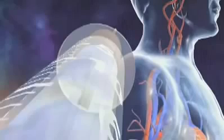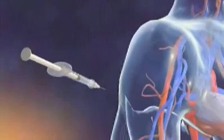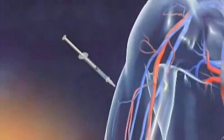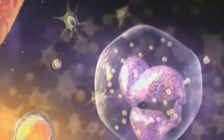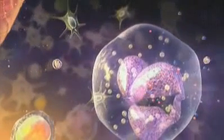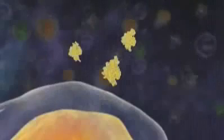Through the administration of a stem cell mobilizing agent, called granulocyte colony stimulating factor, or GCSF, enzymes including neutrophil elastase, cathepsin G, and MMP9 are activated inside the bone marrow.